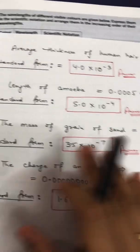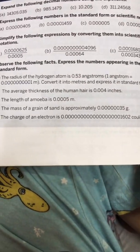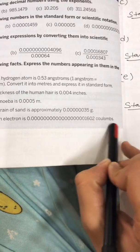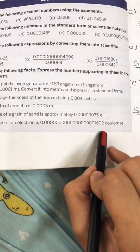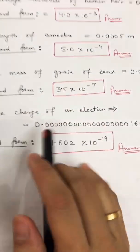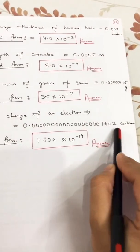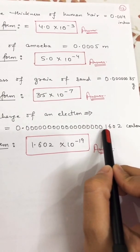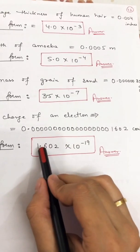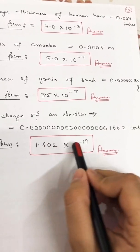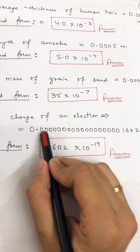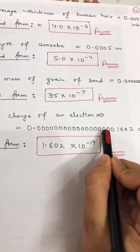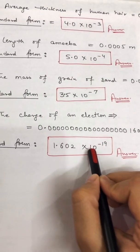Last part: the charge of an electron is 0.0000000000000000001602 coulombs. Standard form: shift the decimal from here to after the first digit — giving 1.602. Before 6, how many numbers are there? Counting: one through nineteen. So the answer is 1.602 × 10 raised to power minus 19.